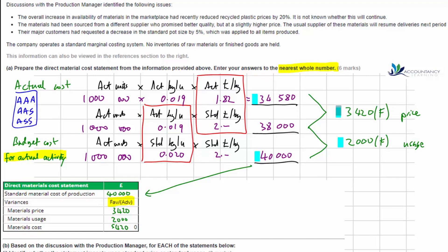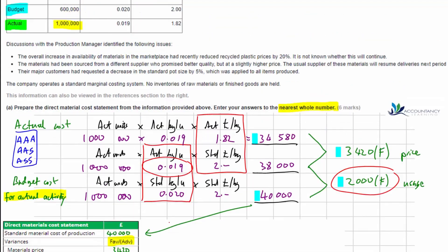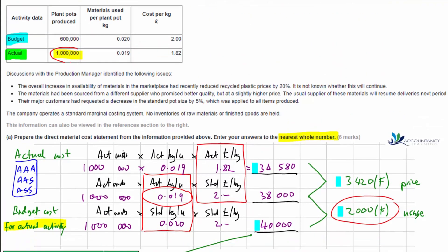In your assessment, there may also be reverse variance questions where you're given the variance number and need to calculate a missing figure — for example, how many kilograms were actually used per unit. The same technique applies: fill out the table with the numbers you do have, identify which are missing, and work backwards to calculate them. Also note that sometimes instead of separate figures for units and kilograms per pot, you may just be given the total kilograms used in production.